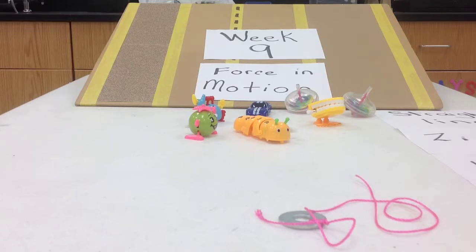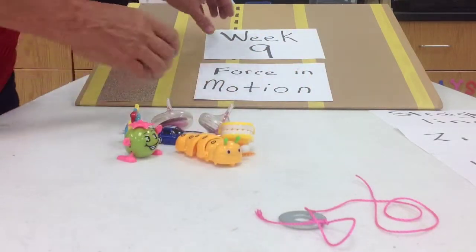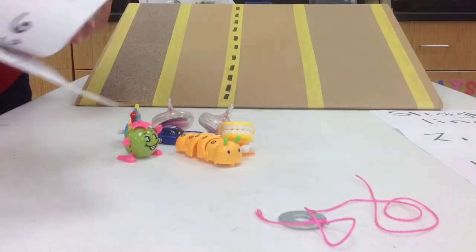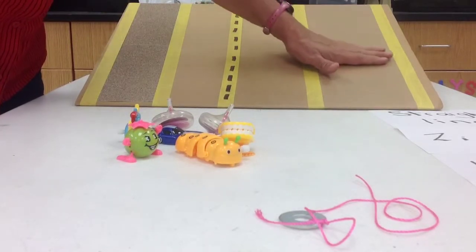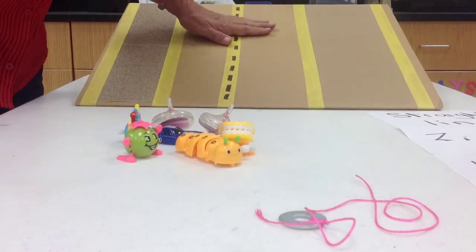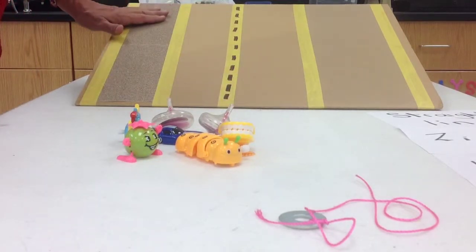Let's start with straight line. What I've done is I made you a ramp. It has a slick surface on it, like maybe an icy road, a regular surface which is just cardboard, and a sandpaper surface.